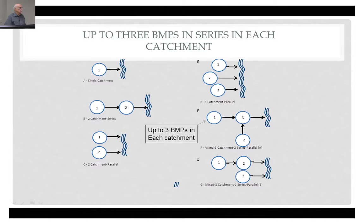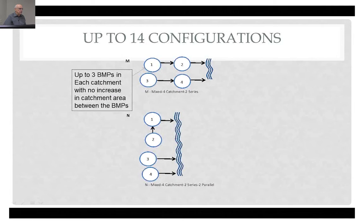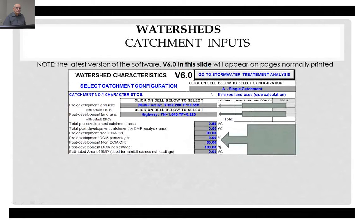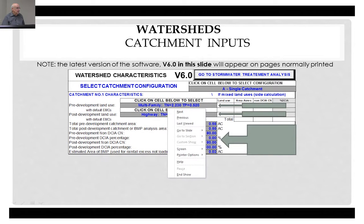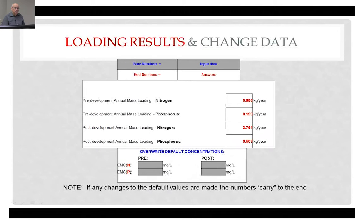Once you put in the catchment data and know your meteorological region, you'll get loading results — the red numbers. It will tell you the pre-development and post-development nitrogen and phosphorus loadings. However, you have the option of changing the default EMC, or event mean concentration, values. If you want to make any changes to the default values, you can overwrite them, and those EMC values will continue on for the rest of the program. The default values always appear on screen when you click on a land use, and they're also listed separately in a tab within the model. Make sure any EMC changes you make are approved by regulatory agencies before proceeding with calculations and BMP specifications.